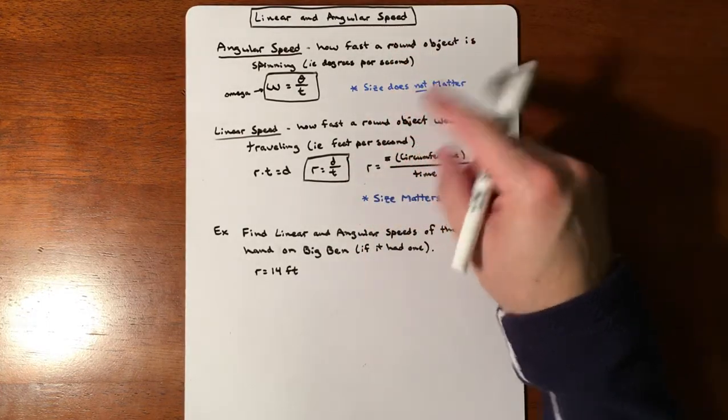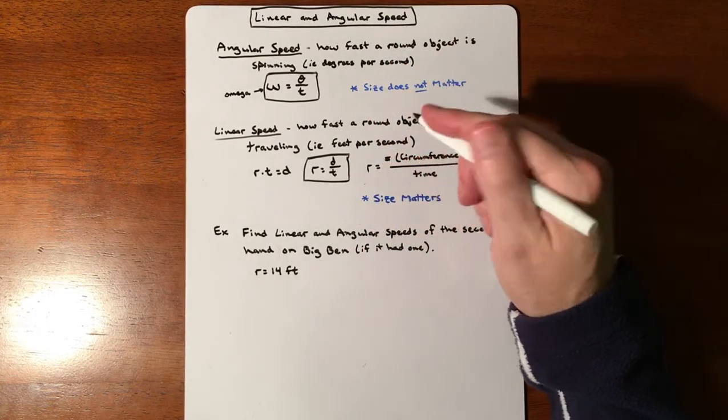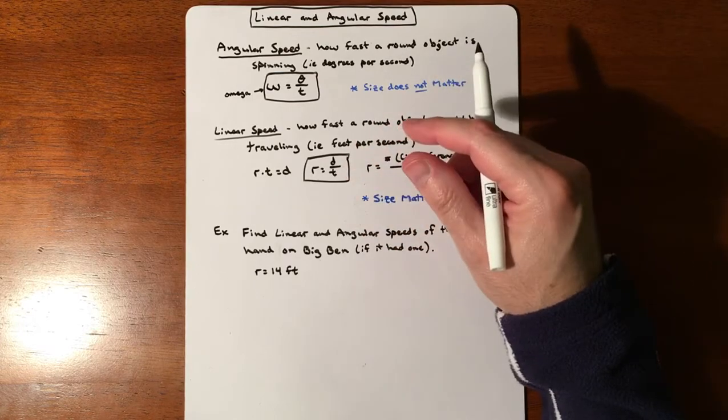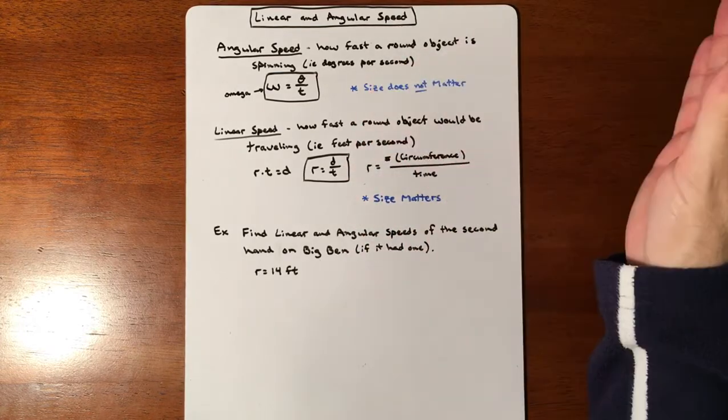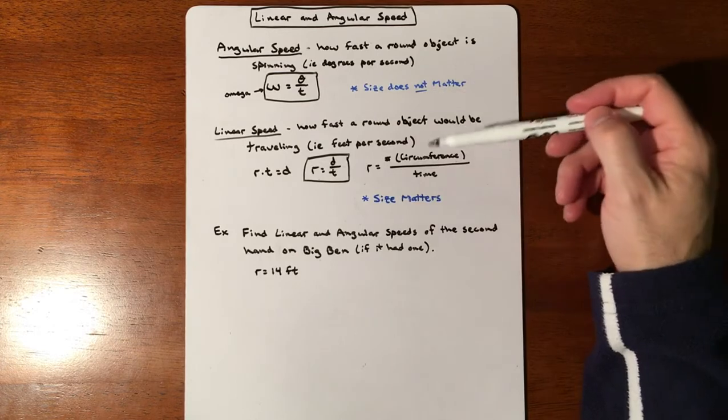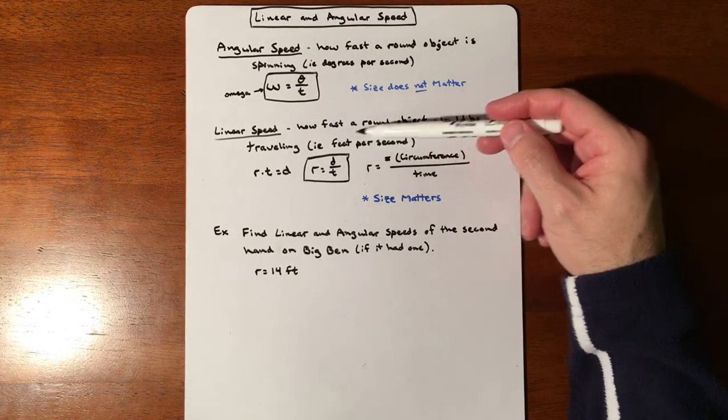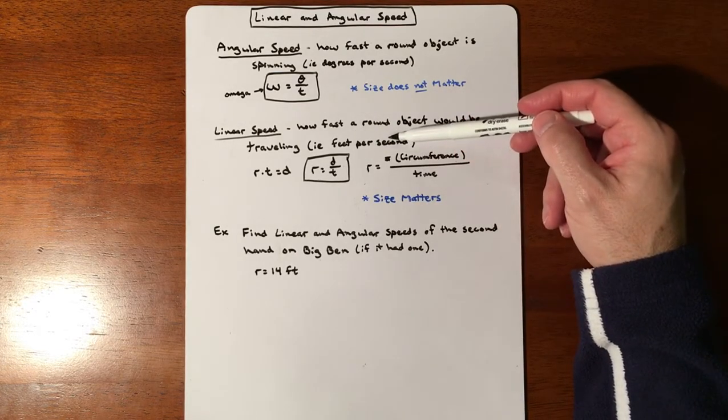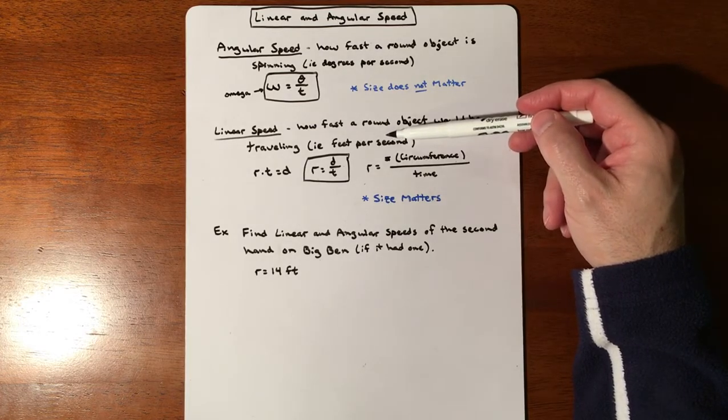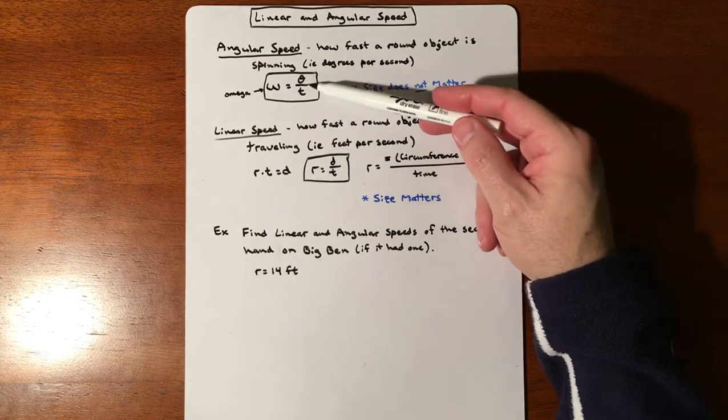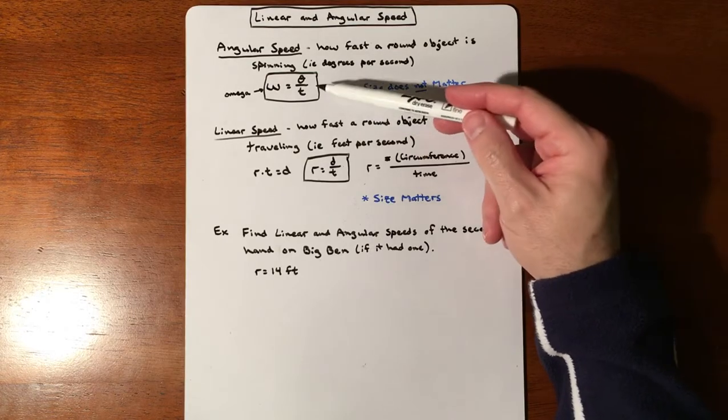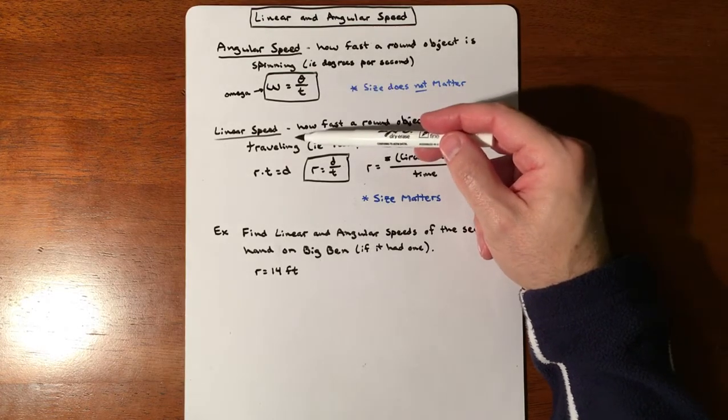If a big tire goes around one time every second versus a little tire going around one time every second, the big tire is going to get further down the road, making it have miles per hour or feet per second. The bigger the object, potentially the faster it's traveling if it has the same angular speed.